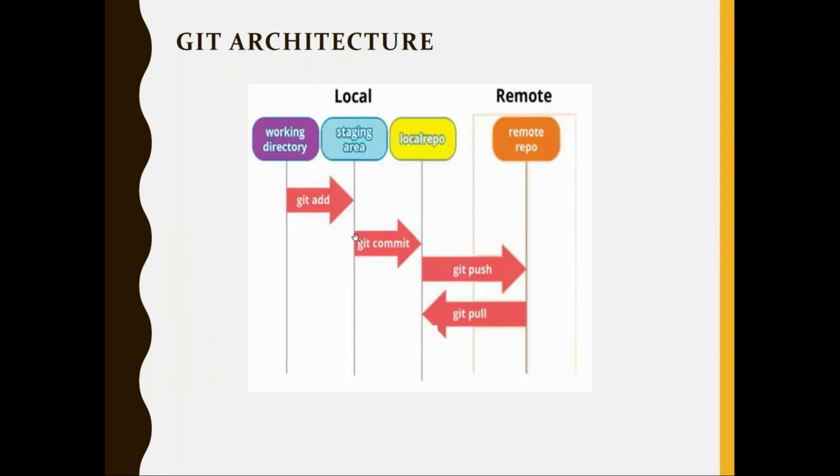Now, we have understood the architecture of distributed version control systems. Now let's talk about the architecture of Git in particular. So like I said, every distributed version control system will have this local repository. Let's say this is my laptop, this is my workstation. I have got a copy of this local repository.